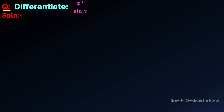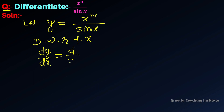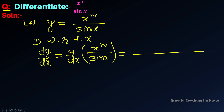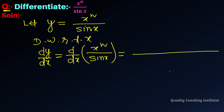Differentiate x to the power n upon sin x. Let y equal to x to the power n upon sin x. Now differentiate with respect to x. This is a fraction — x to the power n upon sin x — so we use the quotient rule.